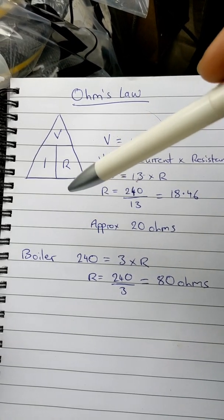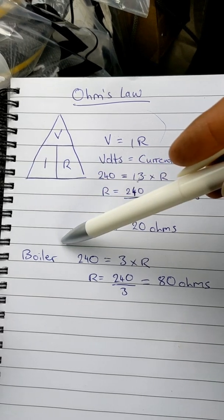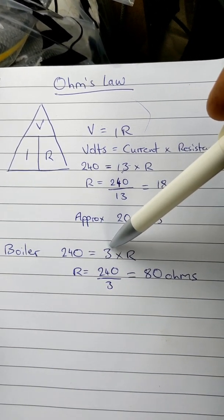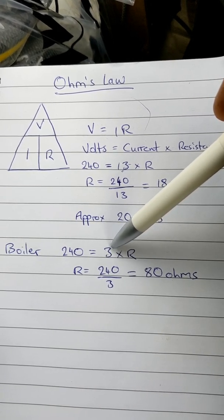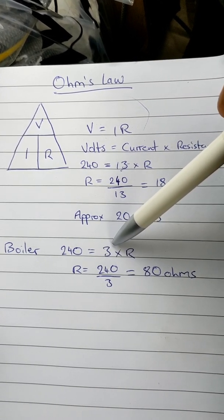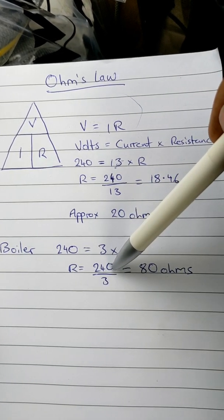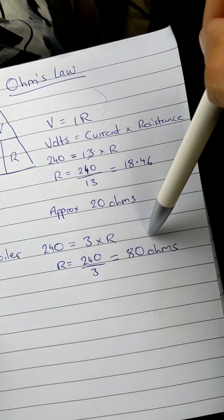Now when we're testing for short circuit on boilers, it's slightly different because boilers are protected by a 3 amp fuse. So all we're doing is we're just swapping this value from a 13 to a 3, because that's the fuse that's protecting the boiler. So you do 240 divided by 3, which gives you exactly 80 ohms.